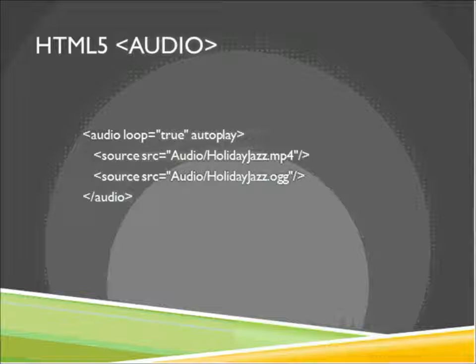Then we have our source elements with different file types. Whatever browser we're using will pick the file type it understands, including codec support, which we'll get into more when we talk about video. And that's all we need for an audio tag — there are additional attributes you can work with, but it's just as simple as this.